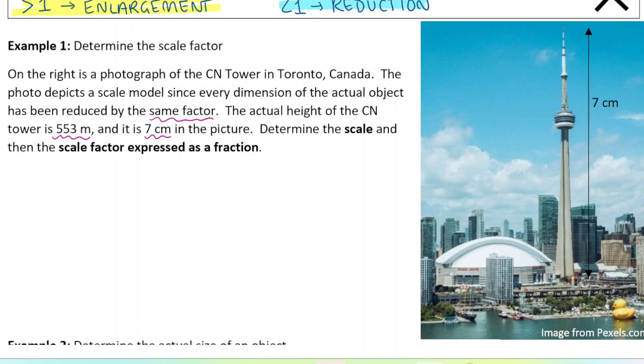First thing we have to do is convert both measurements to the same unit, because when we get our multiplier, it's not going to make sense if we're changing units as well. So let's change everything into centimeters here so we don't have any decimals to deal with. So 553 meters is the same as, there's a hundred centimeters in one meter, and so that would be 55,300 centimeters.